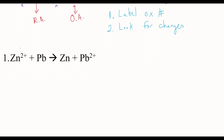First, label these oxidation numbers. I get 2+, 0, 0, 2+. I'm going to draw brackets showing changes on the product side and the reactant side. So zinc goes from 2+ to 0.